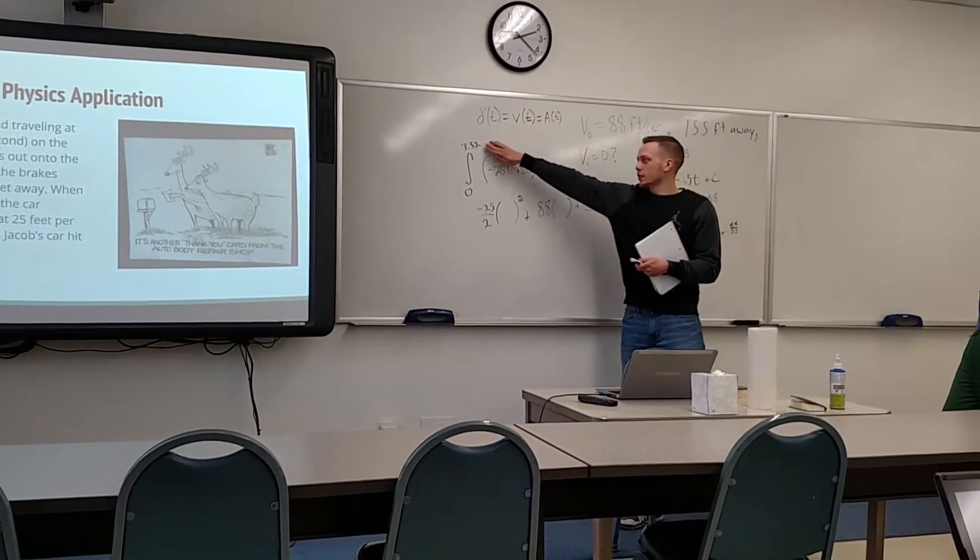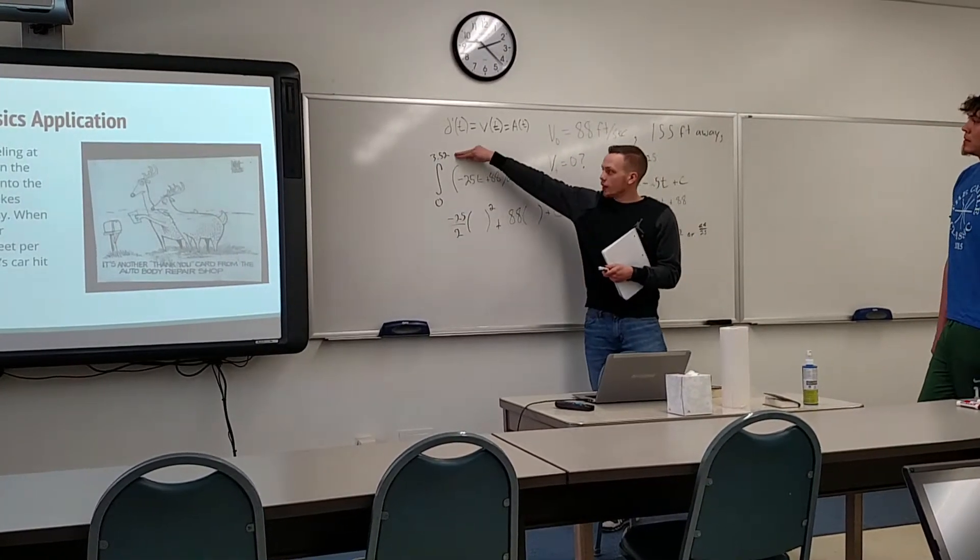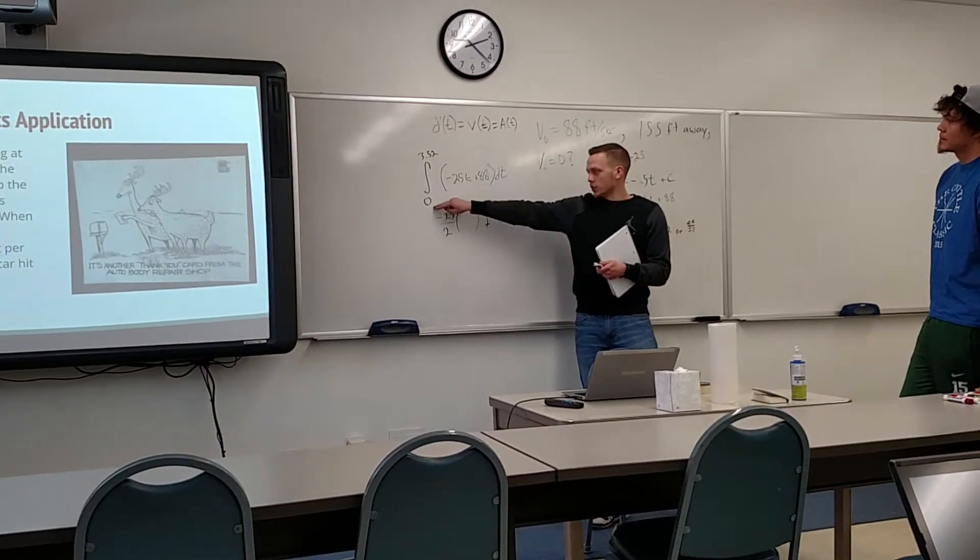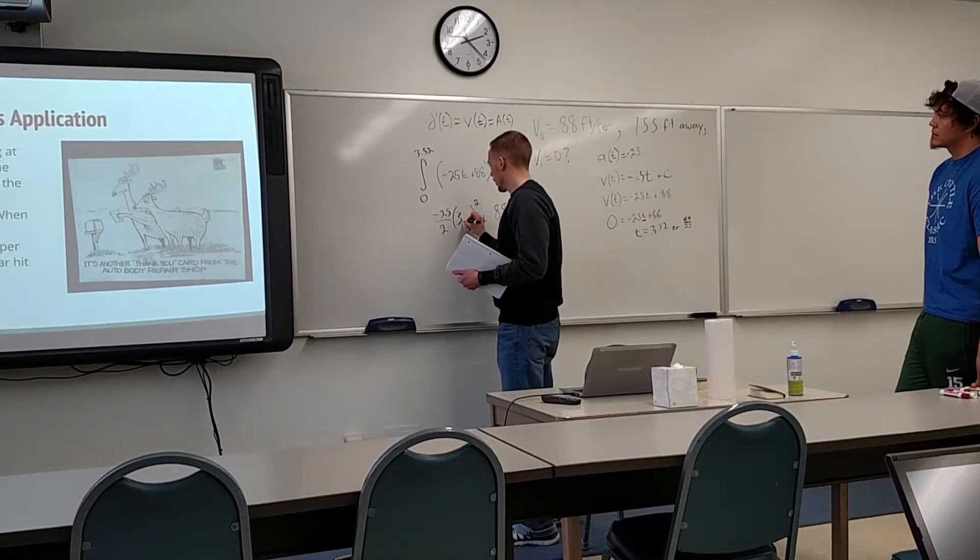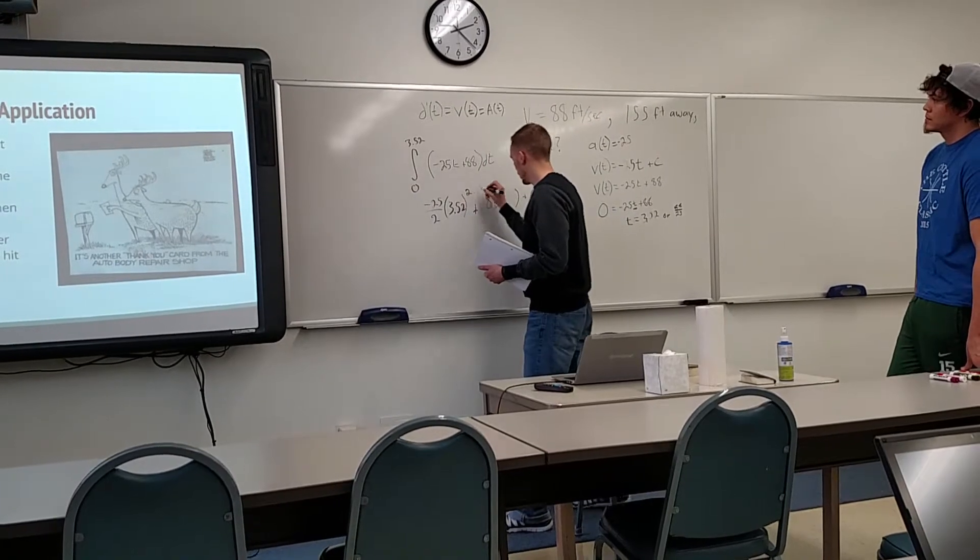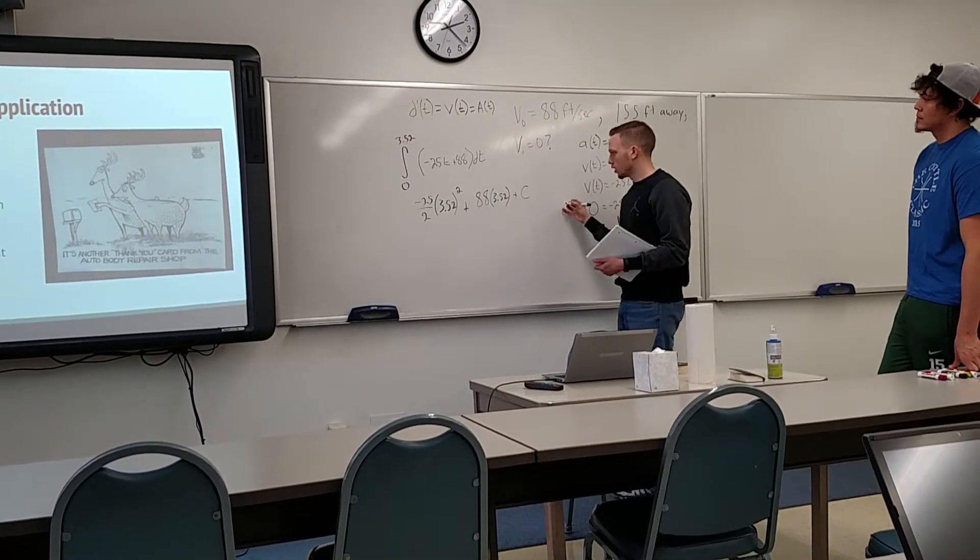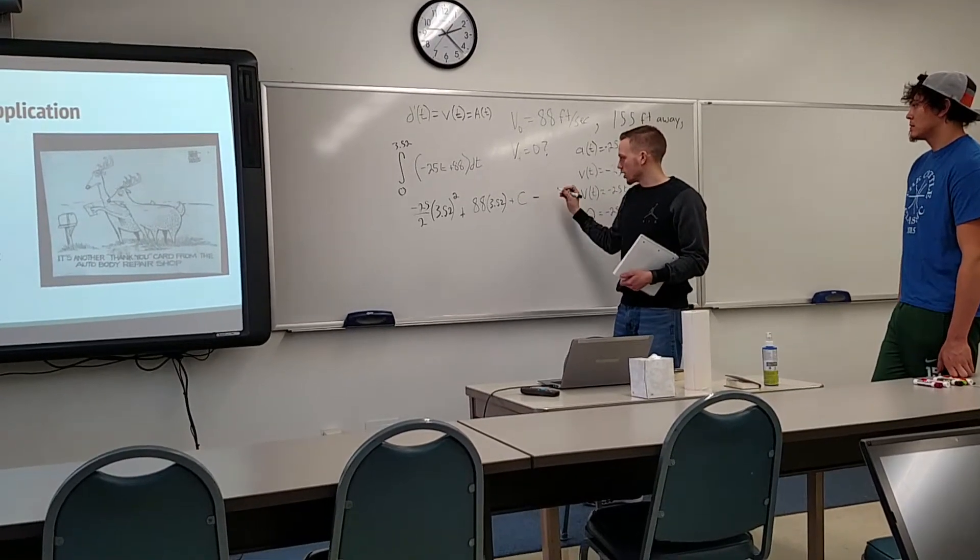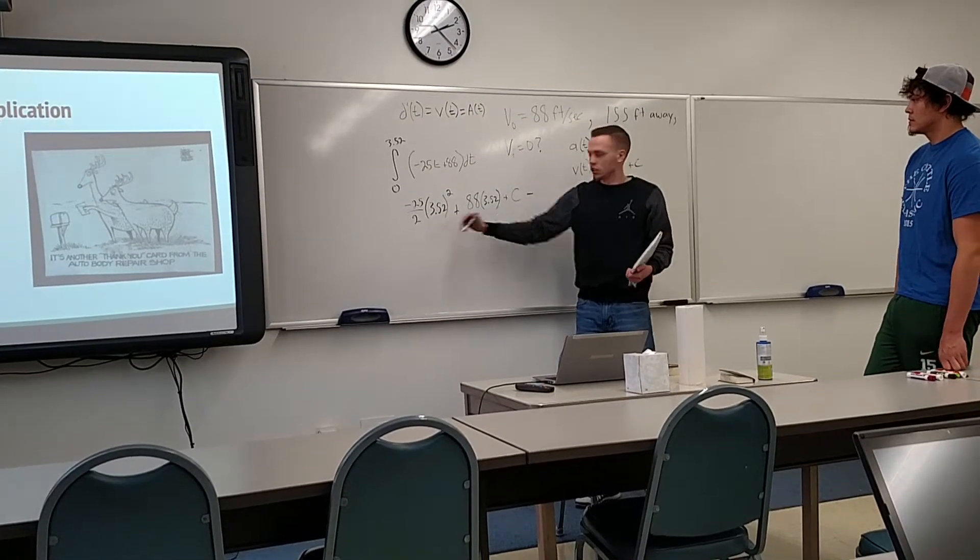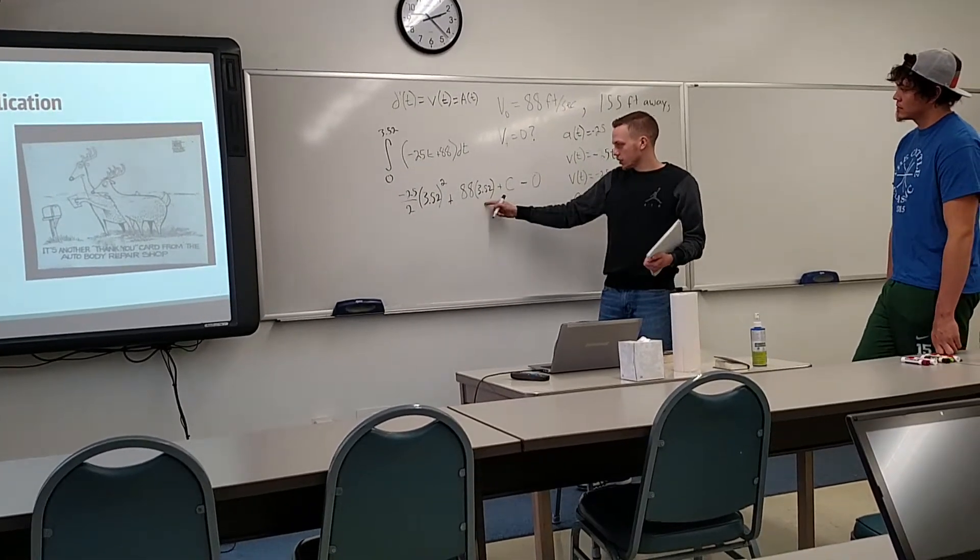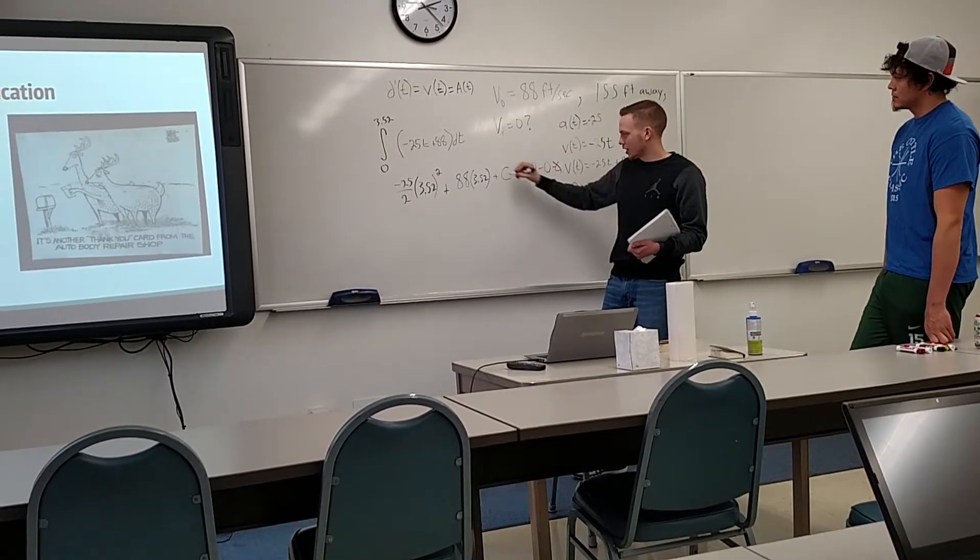But since this has limits on it, we're going to use this and put in 3.52, and we're also going to put in zero, and we're just going to subtract them from each other. So we'll have 3.52 squared there and then 3.52 here. And then if we subtract this, so we're subtracting at zero, what is this term going to be if time is zero? Zero. What's this term going to be? Zero. Then this term will be c, so that will cancel the c's.